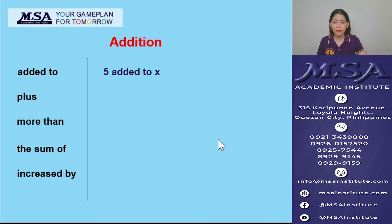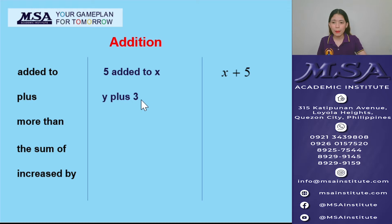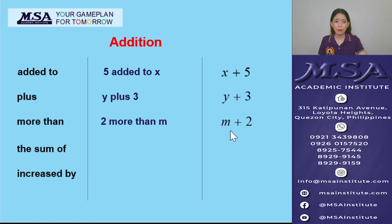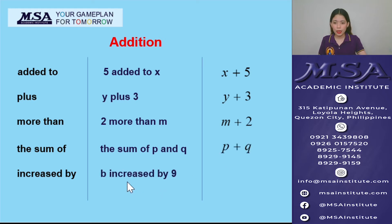Let's try using these in verbal expressions. '5 added to x' translates to x plus 5. 'y plus 3' translates to y plus 3. '2 more than m' translates to m plus 2. 'The sum of p and q' translates to p plus q. And 'b increased by 9' translates to b plus 9.